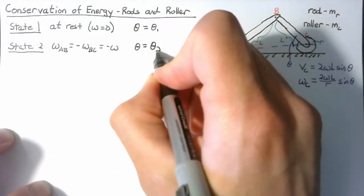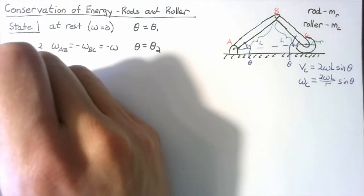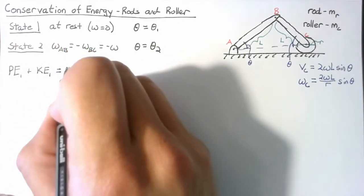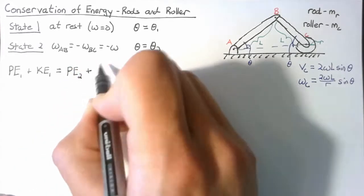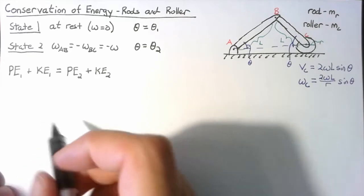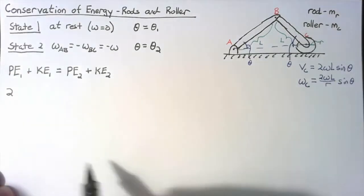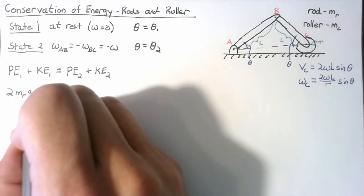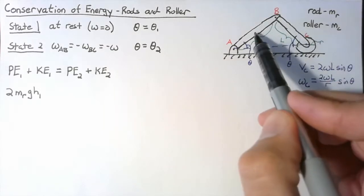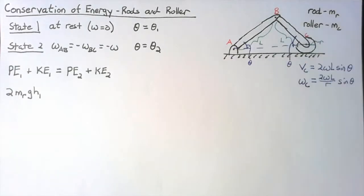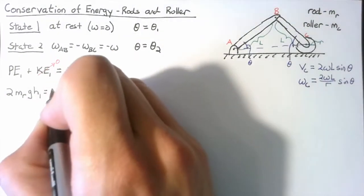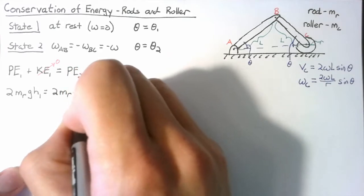In very general terms, there's no work in our system, so we write the conservation of energy equation as the sum of potential energy and kinetic energy at state one equals the potential energy and kinetic energy at state two. We don't have any springs, so the potential energy is just 2 times the mass of the rod times g times h1 — the height of the center of gravity of our rod. State one is at rest, so it has no kinetic energy. State two uses h2 instead.